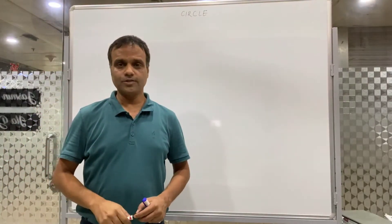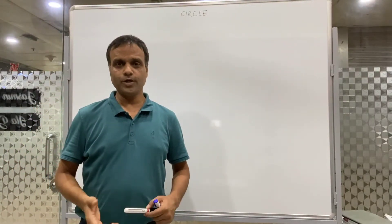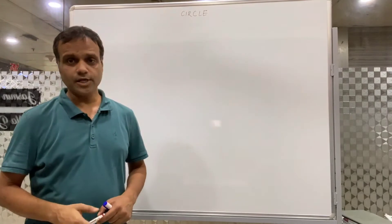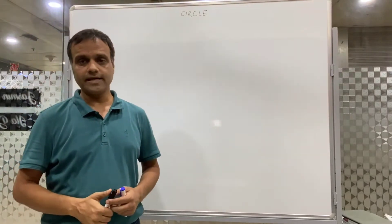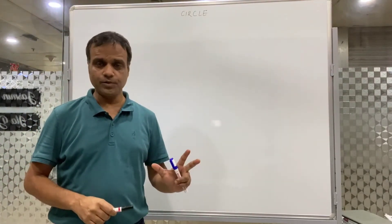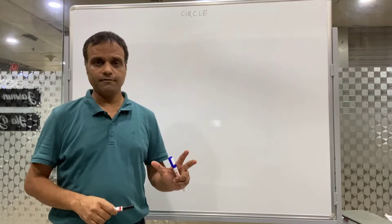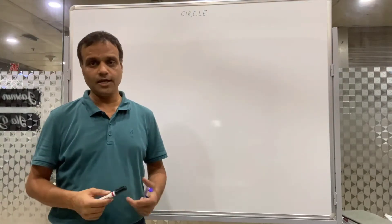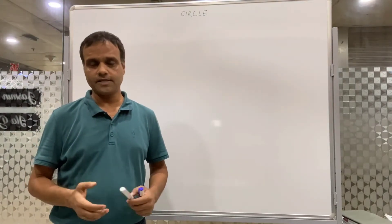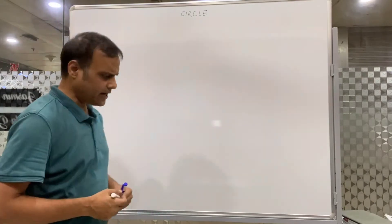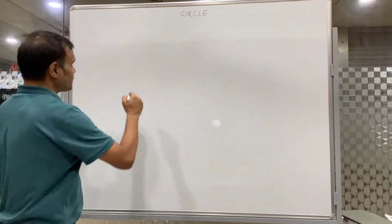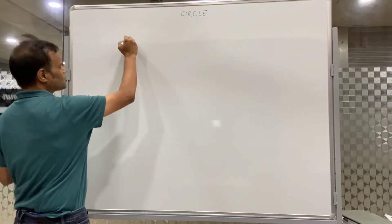Today we are going to cover the chapter on circles, one of the easiest chapters in class 10. There are basically five theorems, and if we know these theorems then any question in any of the exercises can be done. So let's understand the basics of the circle and then we will come to the theorems.